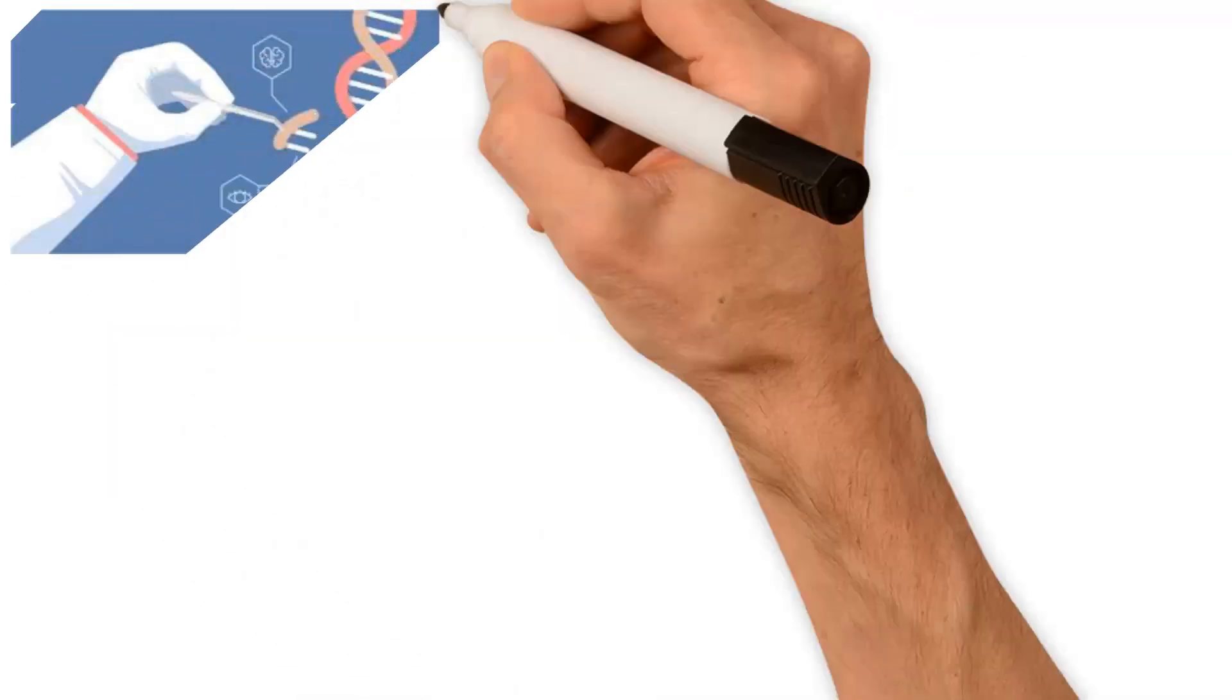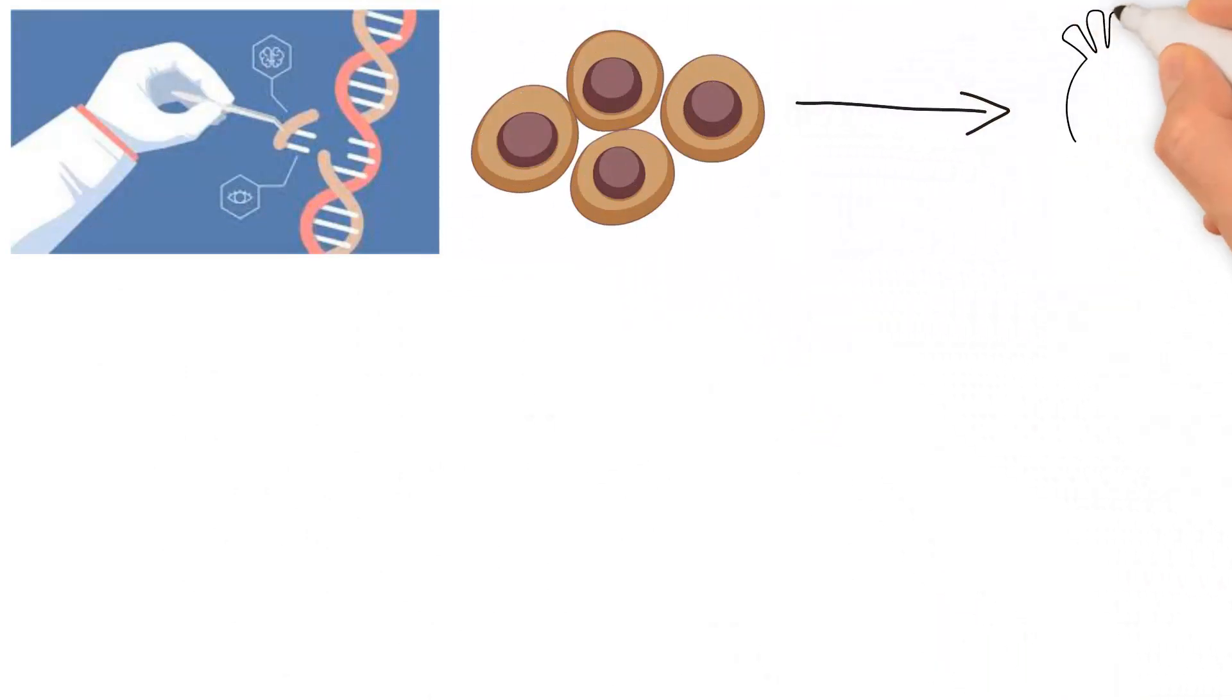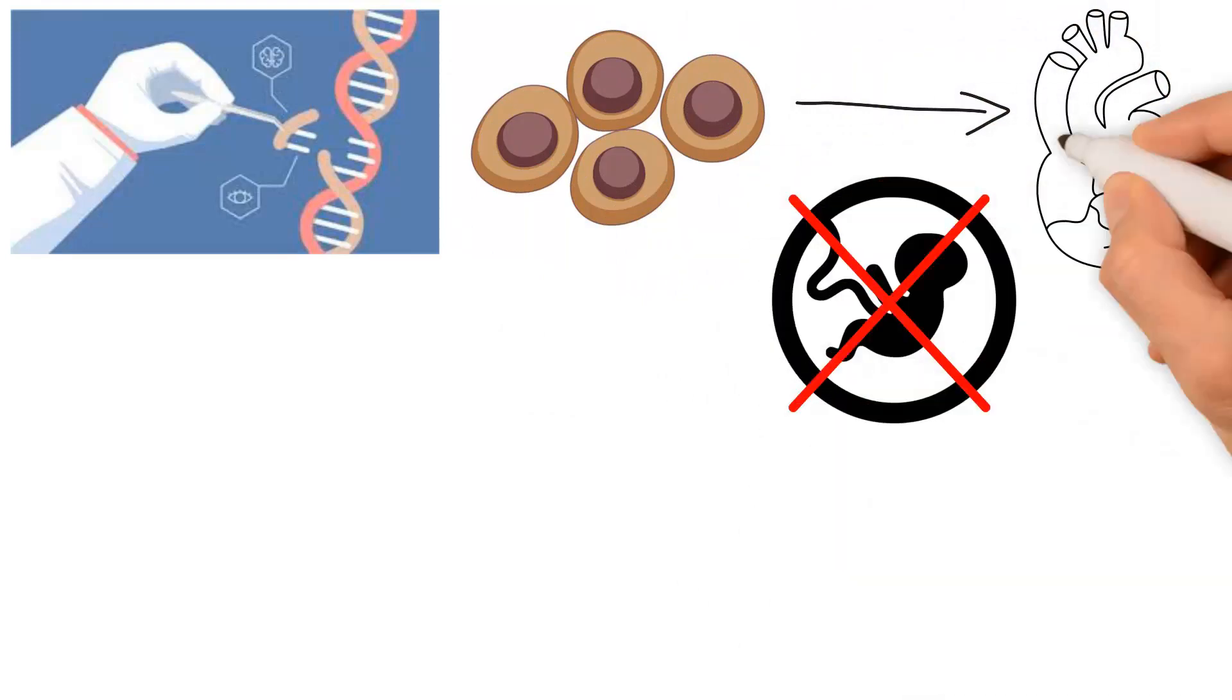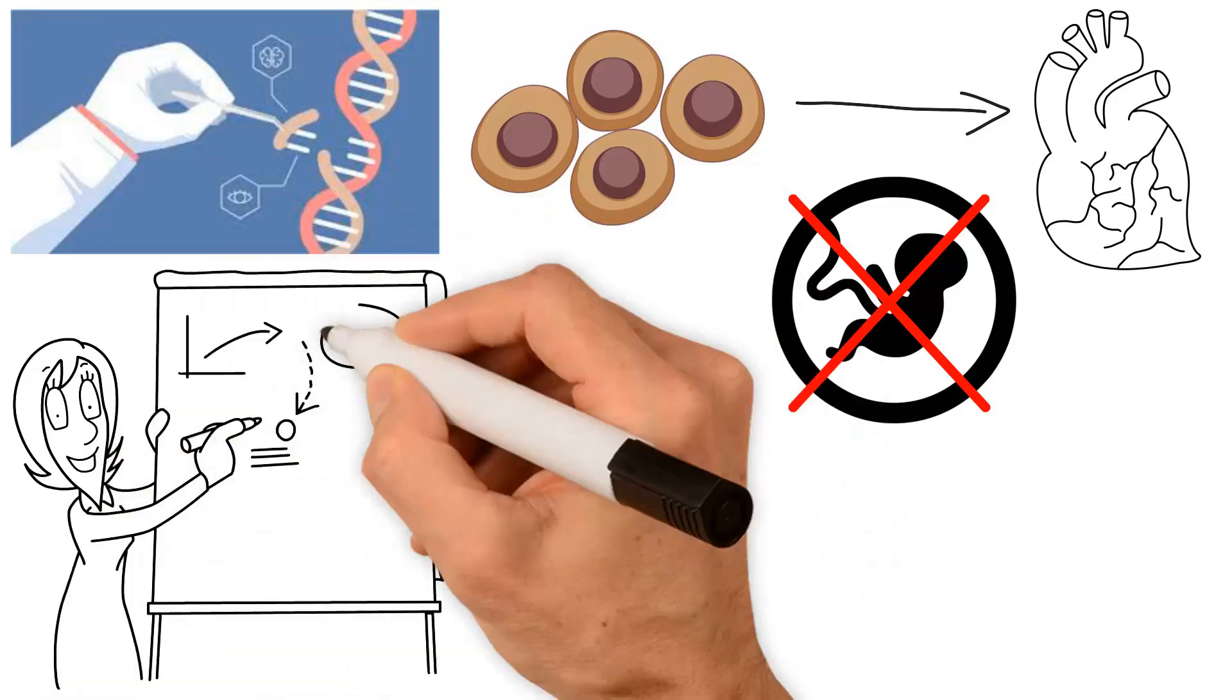Fibroblast cells can revert into IPS stem cells by being reprogrammed. These IPS stem cells can be used to grow tissue for disease modeling instead of using living human beings. This modeling method allows for a far greater rate of scientific discovery.